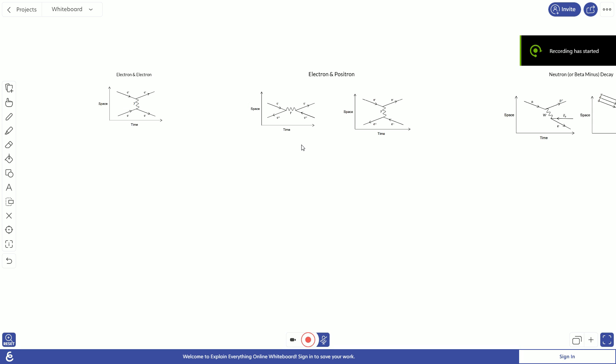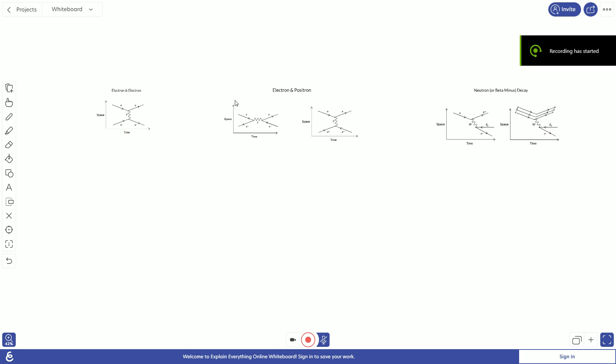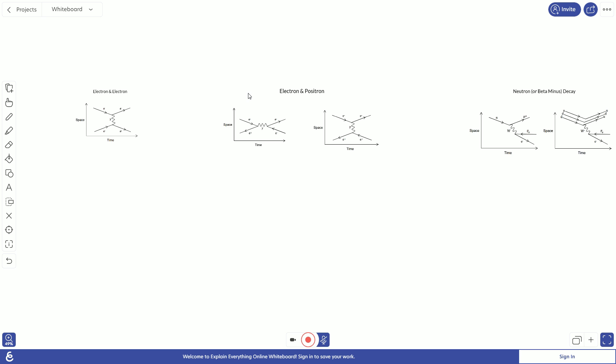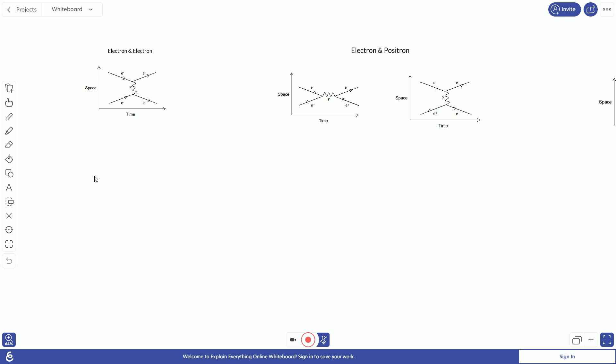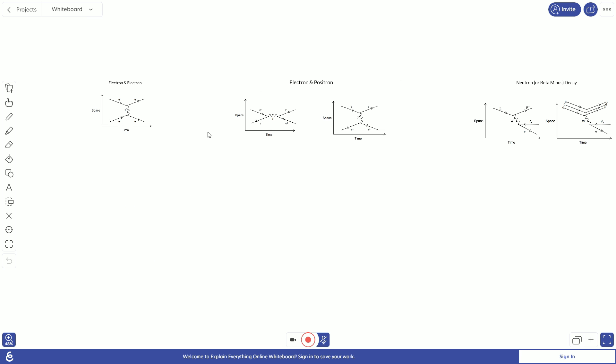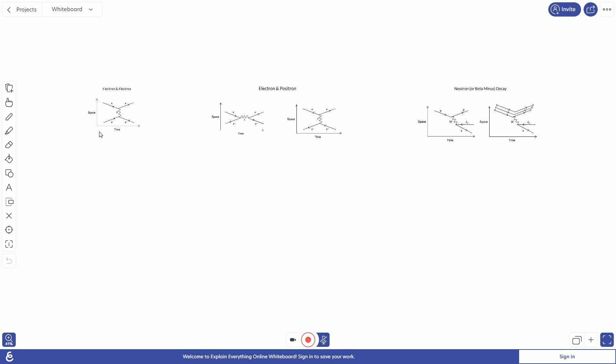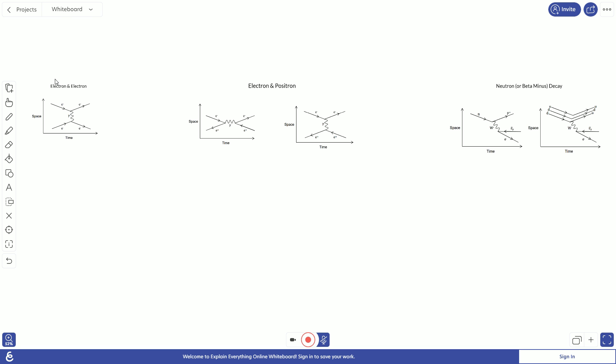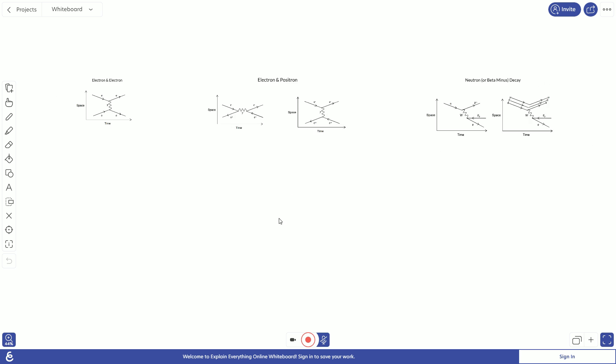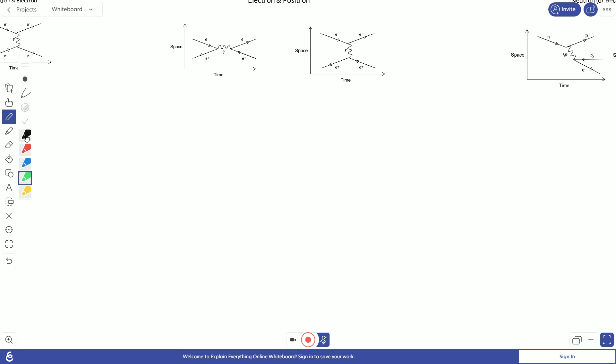Hello everybody, I hope you're doing well. I thought that I would do a video on the types of Feynman diagrams that might show up in our physics test. So there are three broad categories of diagram that might appear. We have electron and electron interactions, electron and positron interactions, and neutron decay.